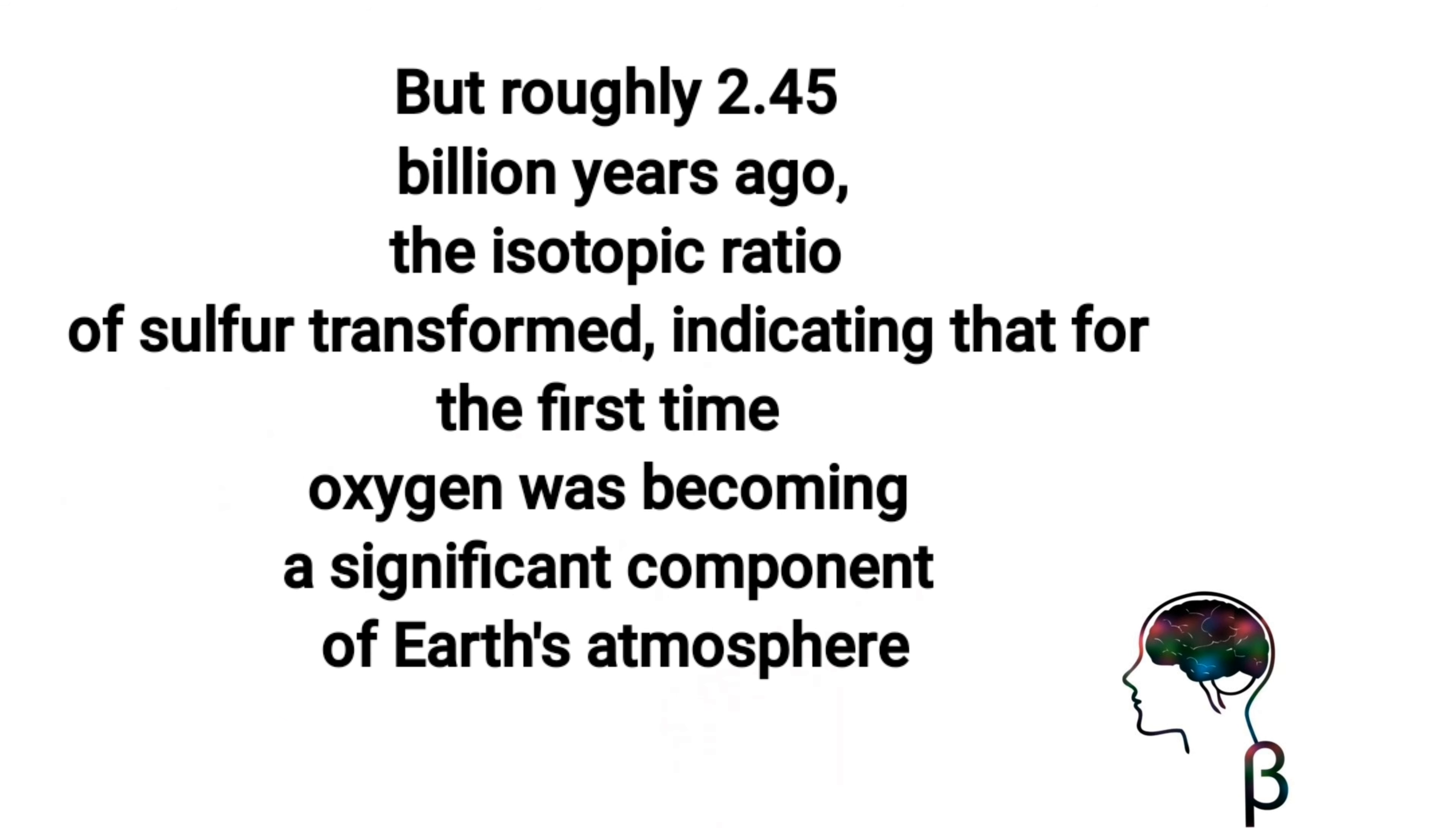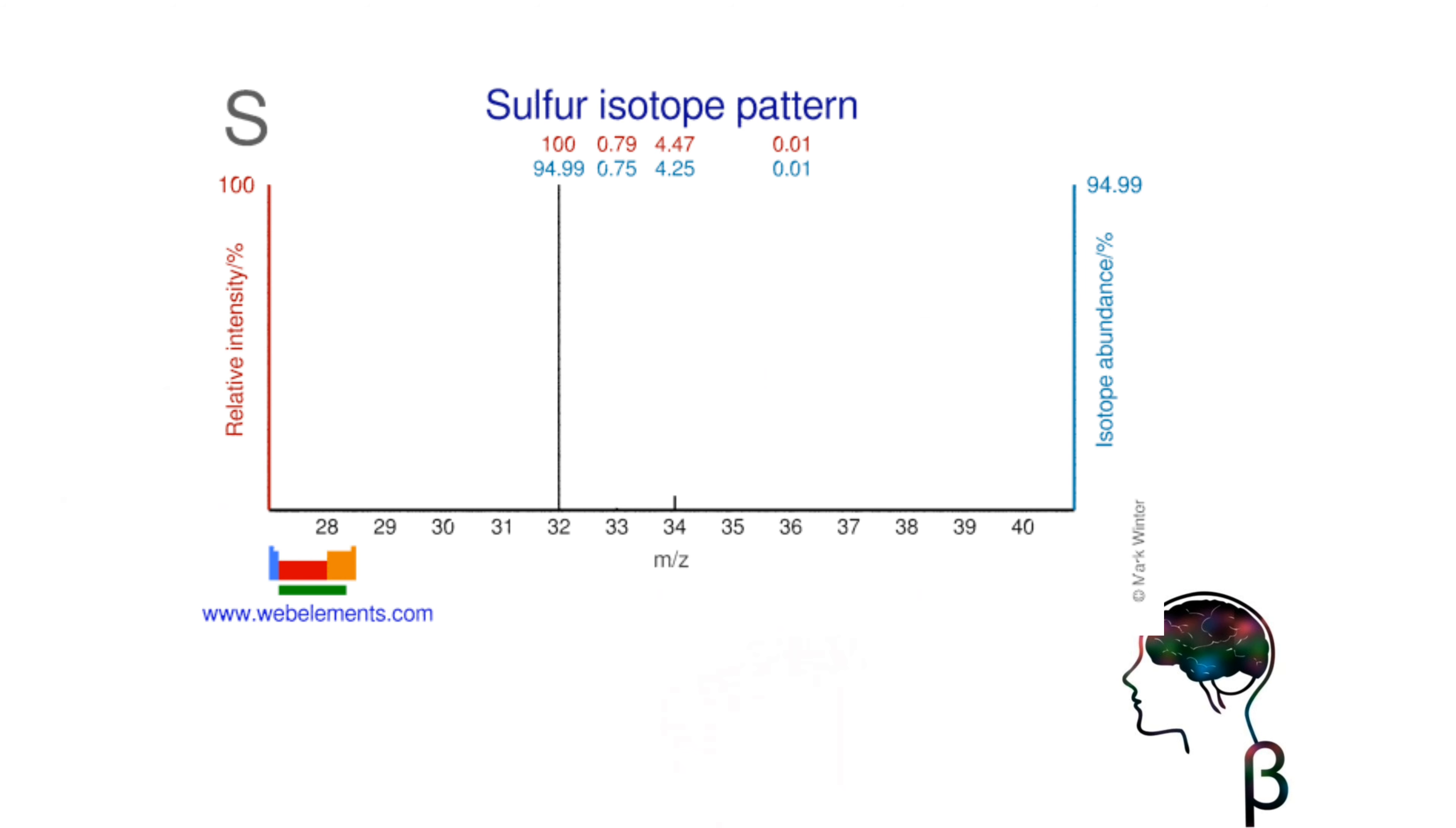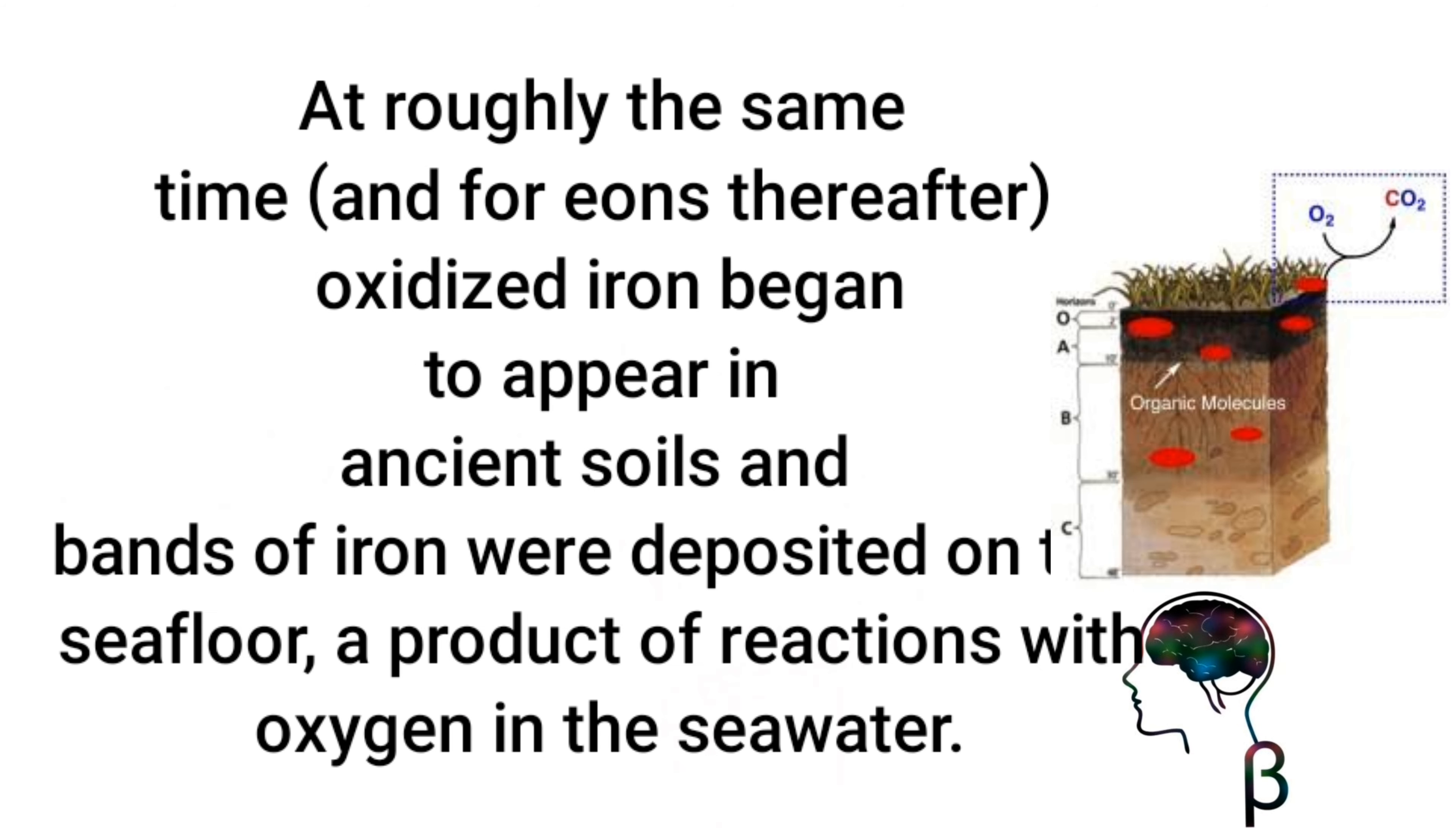But roughly 2.45 billion years ago, the isotopic ratio of sulfur transformed, indicating that for the first time oxygen was becoming a significant component of Earth's atmosphere. At roughly the same time, oxidized iron began to appear in ancient soils and bands of iron were deposited on the seafloor, a product of reactions with oxygen in the seawater.